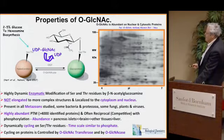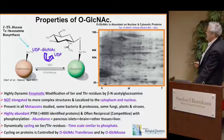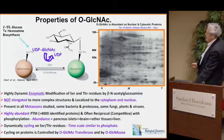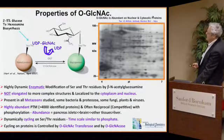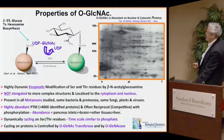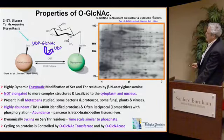It's present in all multicellular organisms, some bacteria, some protozoans, some fungi, plants, and viruses. It's an incredibly abundant modification. It may rival phosphorylation, but it's much more difficult to detect. So far, only about 4,000 proteins have been shown to be modified by O-GlcNAc, and it has a complex relationship with phosphorylation.